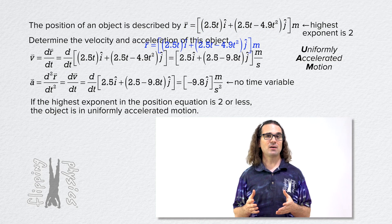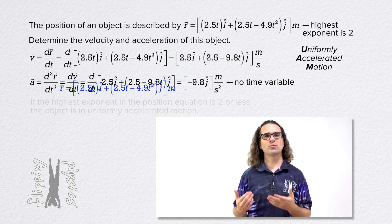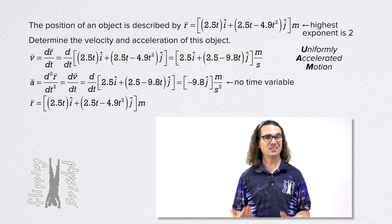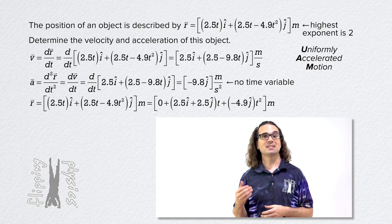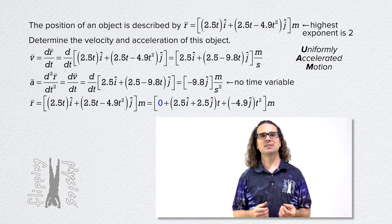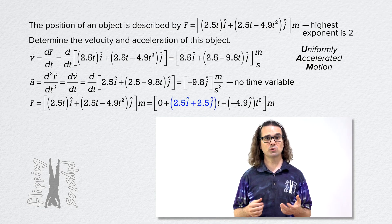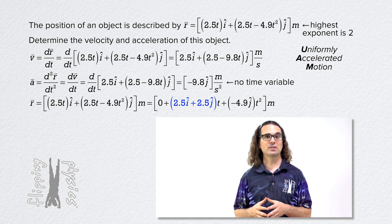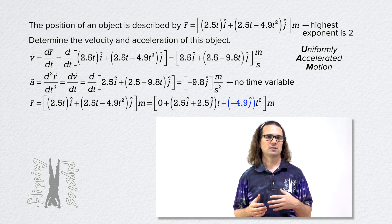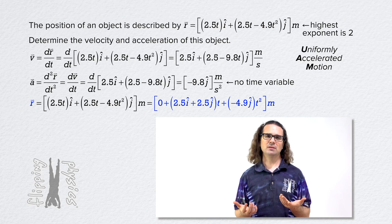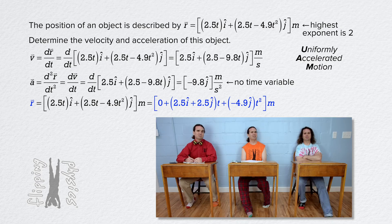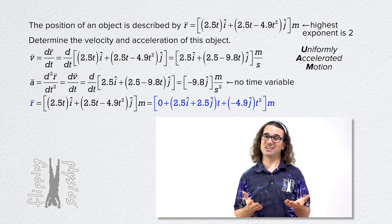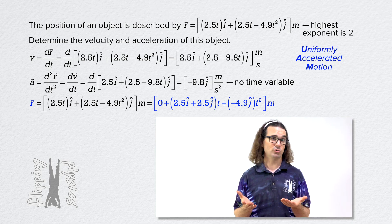OK. Let's identify what we can see when I rearrange the position vector like this. I have added a 0 at the beginning and combined all the terms with time to the first power and the only term with time to the second power is at the end. Does this look familiar to anyone? Not really. So, we already identified this as uniformly accelerated motion.